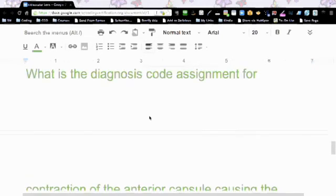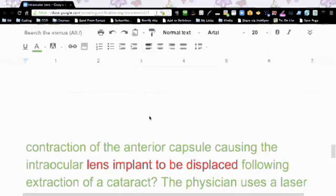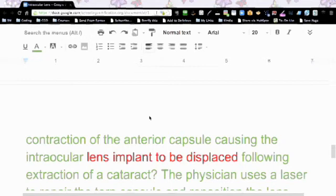So what is the diagnosis code? Oh, I just rewrote it here. What I have highlighted in red is what was key to me choosing B. It says lens implant to be displaced. To me, that is a mechanical issue going on here.